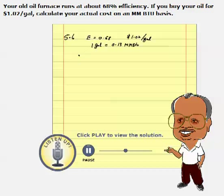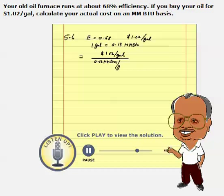We apply the formula to get the actual cost: cost per unit fuel, $1.02 per gallon, divided by the heating value, 0.13 million BTUs per gallon — we need matching units — and times the efficiency, 0.68. Gallons cancel, and we get $11.50 per million BTUs.